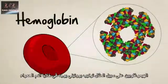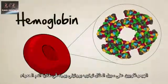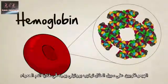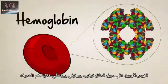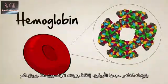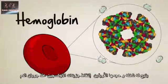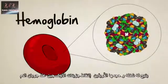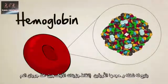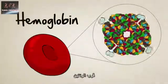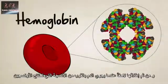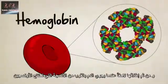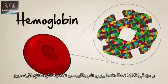Hemoglobin, for example, is a protein structure found in red blood cells. Its unique shape and size allow it to capture oxygen molecules when blood flows near the lungs, and then release them later when blood flows near oxygen-starved tissues.